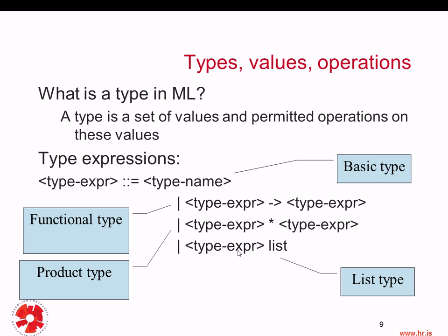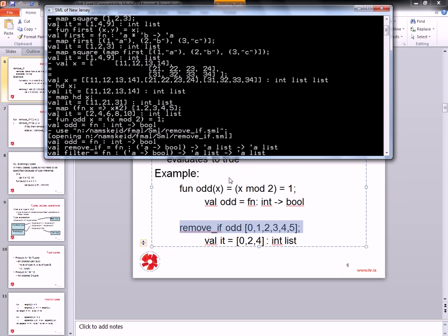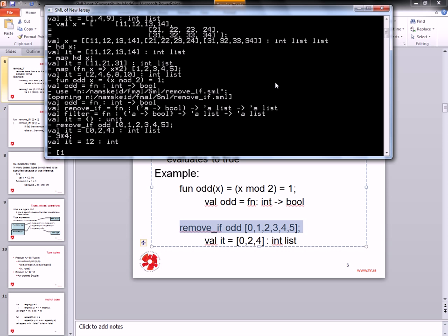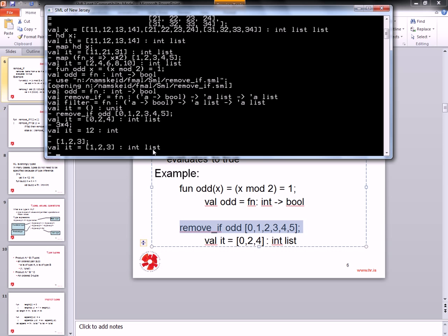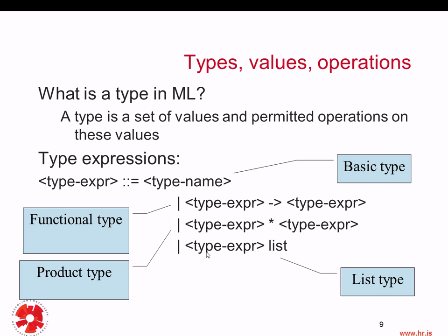Typing [1,2,3] gives us an integer list back. This enumerates all possibilities of types in ML: basic types, functional types, product types, or list types. The length function maps a list of some type A to an integer. It doesn't know what type of list — it could be integer or character — and this is the polymorphic nature of the language. Length of [1,2,3] is 3 with an integer list, and length of [1.0,2.0,3.0] is also 3 with a real list.